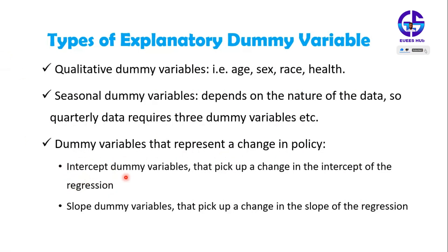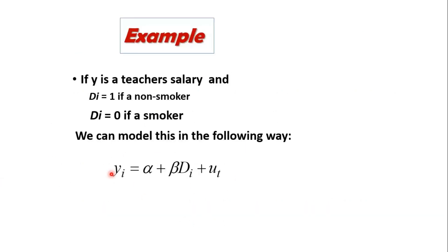Dummy variables that represent a change in policy include intercept dummy variables and slope dummy variables. Intercept dummy variables pick up a change in the intercept of the regression, whereas slope dummy variables pick up a change in the slope of a regression.